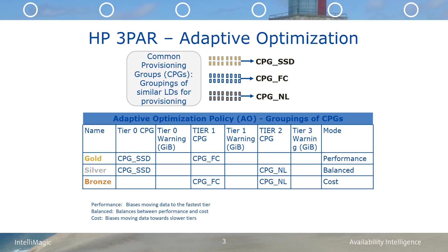In the case of the silver AO policy, we have a balanced mode, which instructs AO to distribute the IOs evenly based on the IOPS capabilities of the drives and the space available. The bronze AO is set to cost and is biased towards the near-line tier. There is also a capacity warning that influences the way AO works. If the amount of space consumed in a tier exceeds the warning limit, then AO will attempt to move regions from the full tier to any other tier with free space.